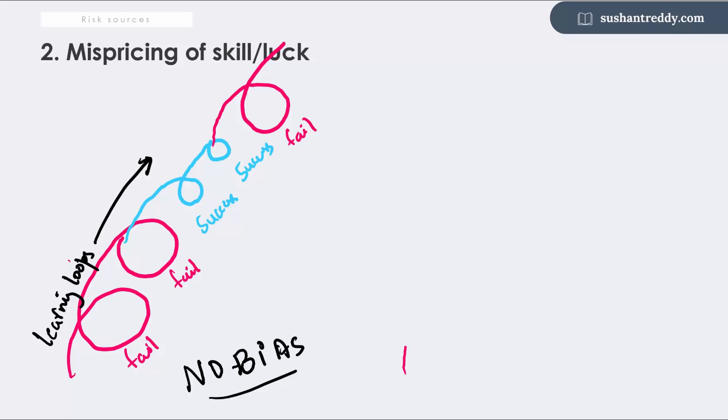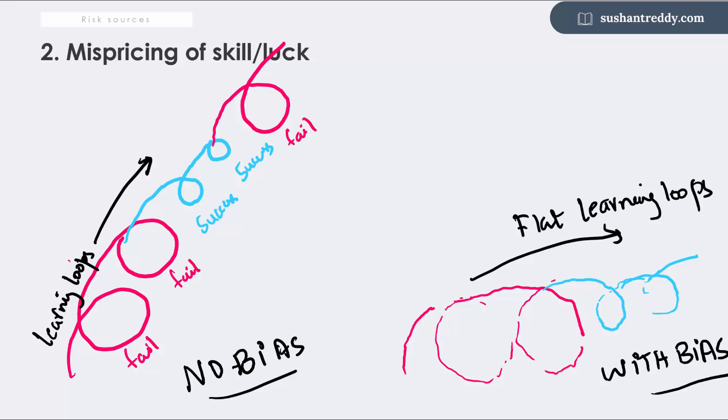When we are victims of something like a self-serving bias, this loop breaks. Since we attribute a failure to bad luck and success to our own skills, we have little incentive of identifying where we fell short on skills and what we could have done differently to reduce our exposure to bad luck. Depriving ourselves of this analysis leads to an incomplete or stunted loop, and since one loop doesn't feed into the other, we lose out on the compounding effect of lessons from both successes and failures.